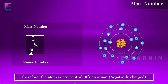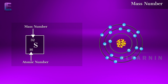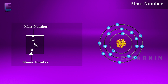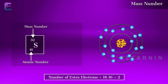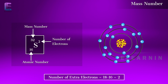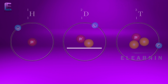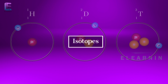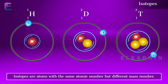The number of protons is not equal to the number of electrons, therefore the atom is not neutral — it is an anion, negatively charged. The number of extra electrons equals 18 minus 16, which is 2. So the symbol is S with mass number 32 at the top left, atomic number 16 at the bottom left, and a 2− charge.